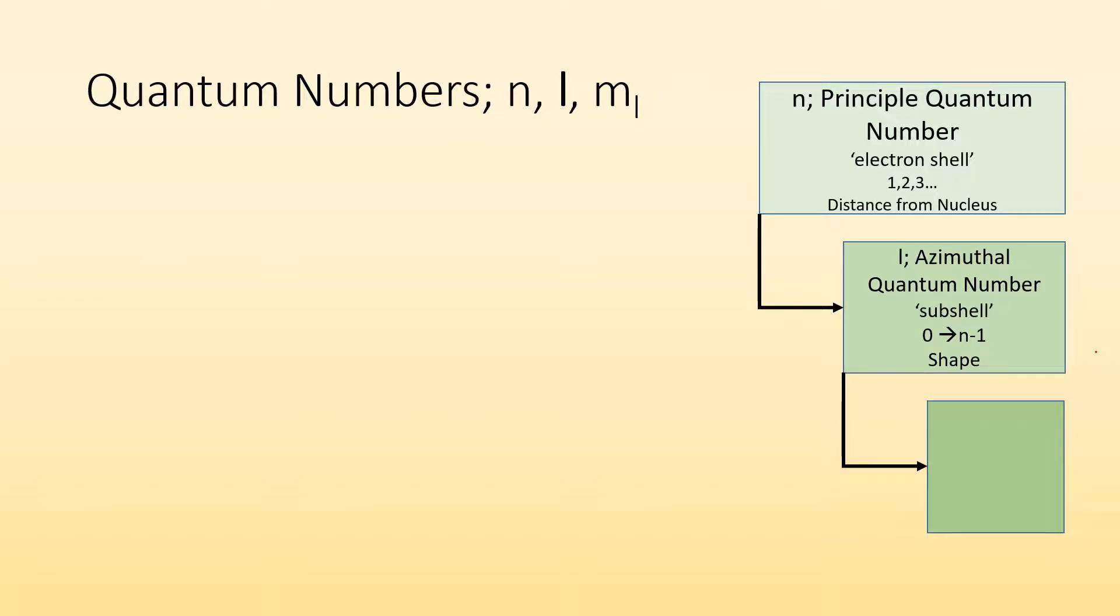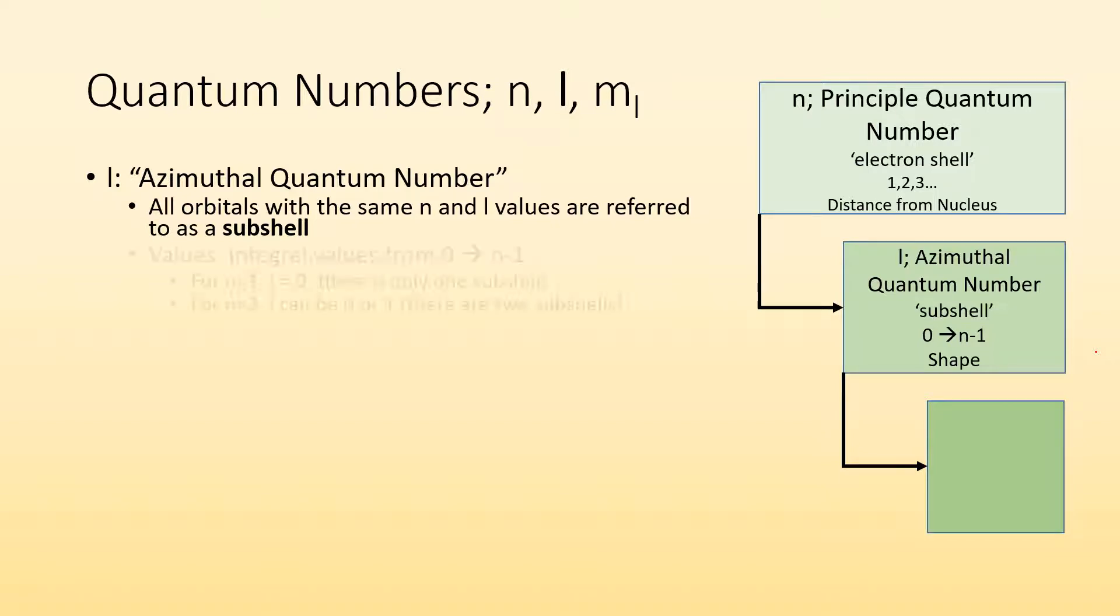So next quantum number, L, referred to as the azimuthal quantum number. So all orbitals with the same n and L values are referred to as a subshell. So values for L are some positive numbers between zero and up to n minus one. So if I'm in the first energy level, n equals one, there's only one possible L value. It's zero. There's only one subshell for that. If I get into the second energy level, n equals two, there can be two subshells. It can be zero or one.